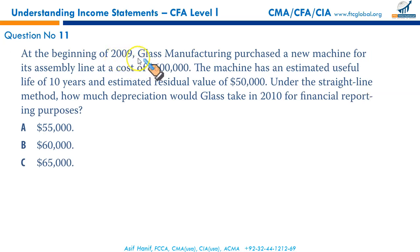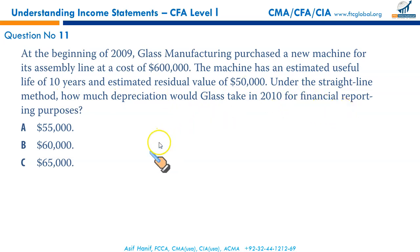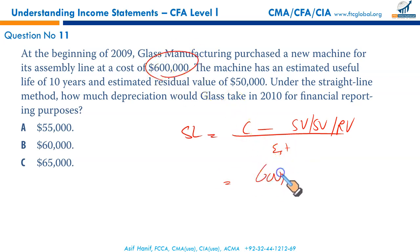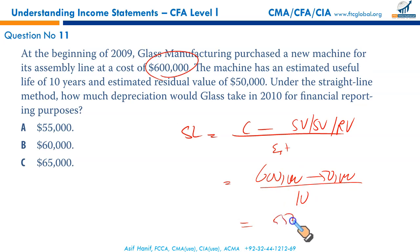Glass Manufacturing purchased a new machine for $600,000 at the beginning of 2009, with an estimated useful life of 10 years and residual value of $50,000. Under the straight-line method: cost minus salvage value divided by estimated life = ($600,000 − $50,000) / 10 = $55,000 annual depreciation charge for 2009 and each subsequent year. That makes A the correct option.